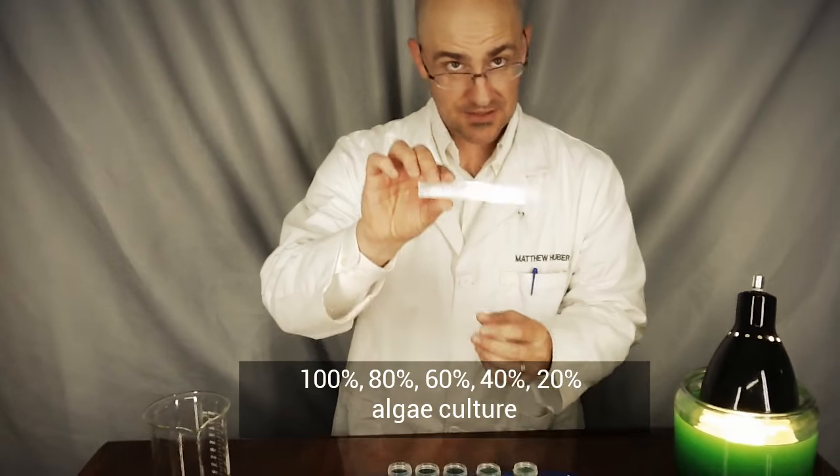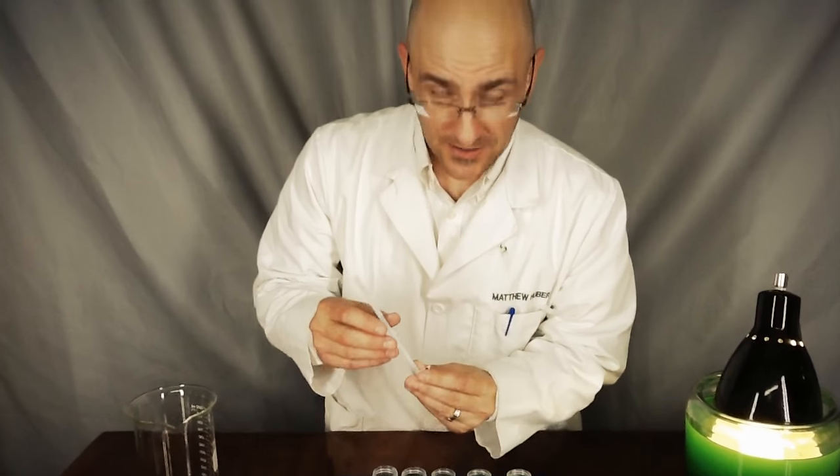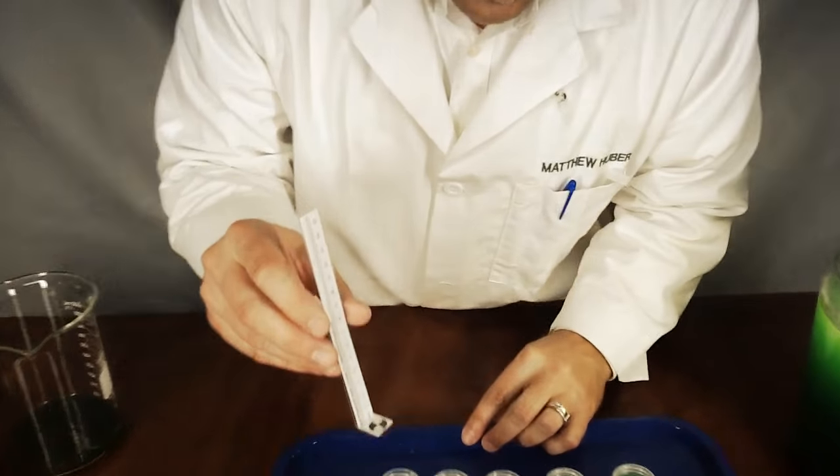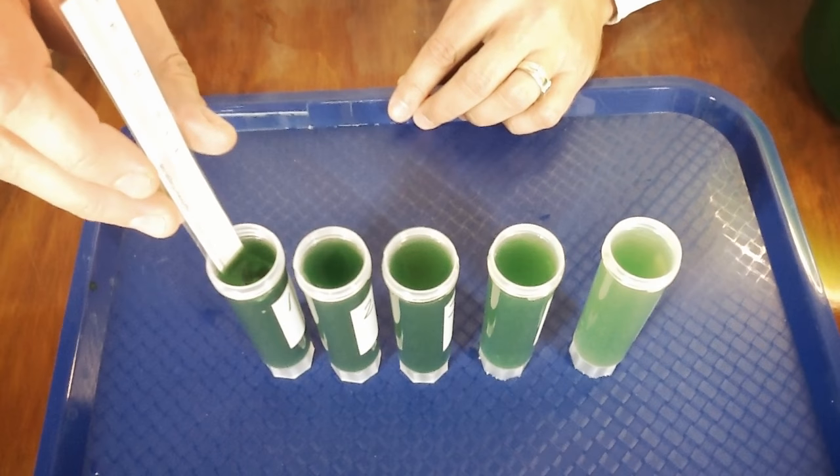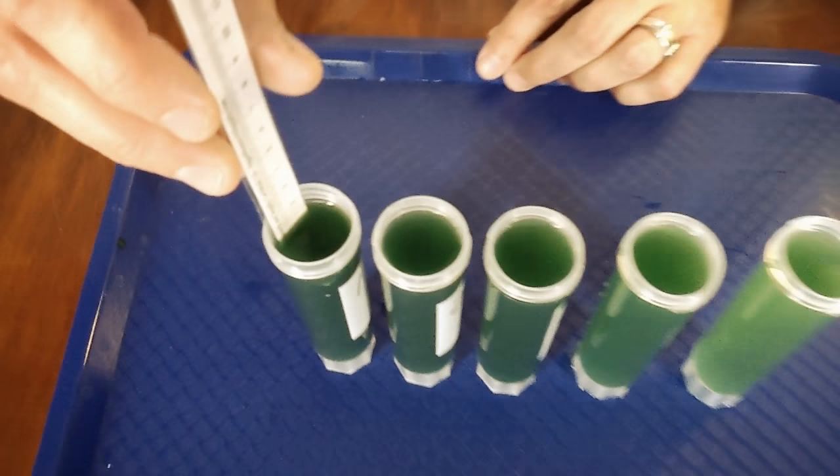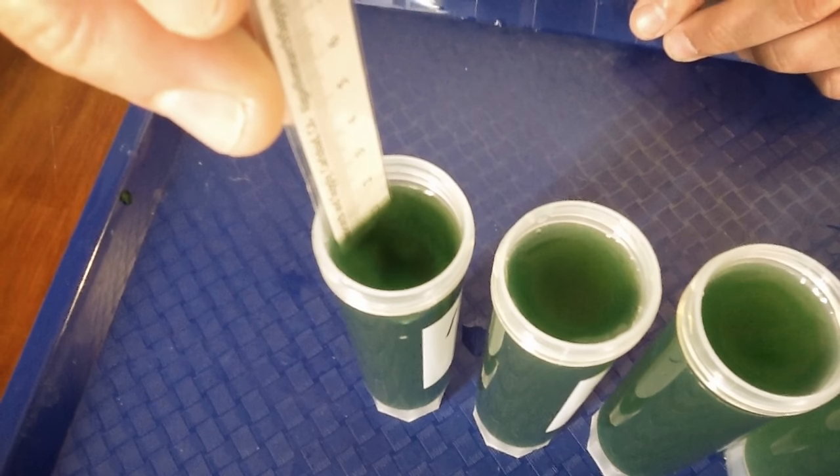Now we're going to use the Secchi stick and check this out. So this is the first tube, this is the neat culture, and we are at around 0.8 centimeters.